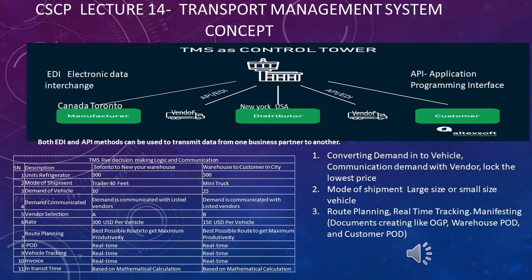The TMS software acts as a control tower, integrated with your website. When you receive an online order — say 500 units of a refrigerator model from 500 customers in New York — that information is passed to the manufacturer. The TMS first determines what type of vehicle is needed. For 800 kilometers, it selects a large vehicle — for example a 40-foot container — to save cost on the long distance.